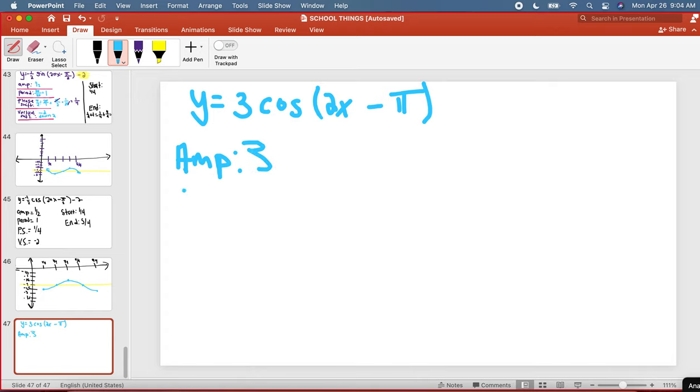Then we have our period. You know that when you're finding a sine graph or a cosine graph, your period is 2 pi divided by b. In this case, b is 2, so 2 pi divided by 2, and that is pi.